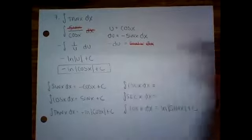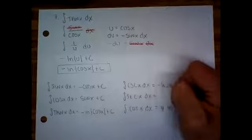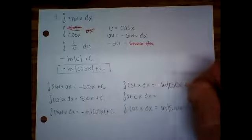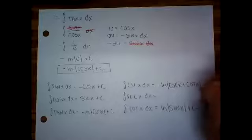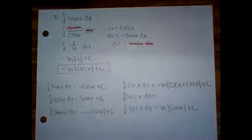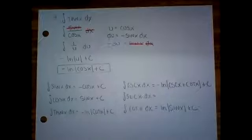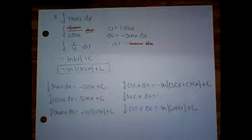All right. Integral or anti-derivative of cosecant. It is negative ln cosecant of x plus cotangent of x plus c. Cosecant and cotangent were buddies for the derivative rules. They're still buddies for the anti-derivative rules.